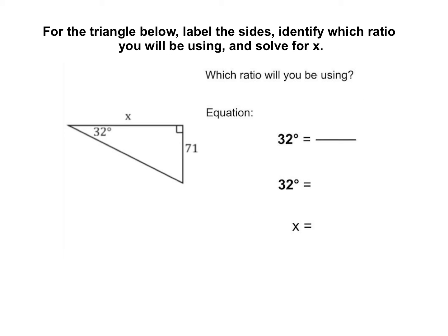In this final triangle, let's again start by labeling our sides. In relationship to that 32 degree angle, you can see that the x is the leg that's next to it, so x is going to be the adjacent side, and the 71 is the leg that's across from the 32 degree angle, so that's going to be the opposite.